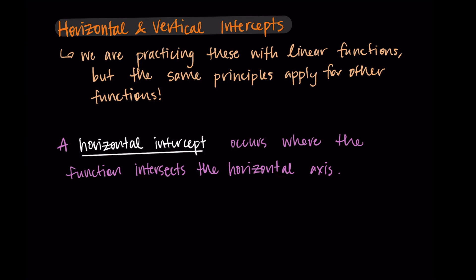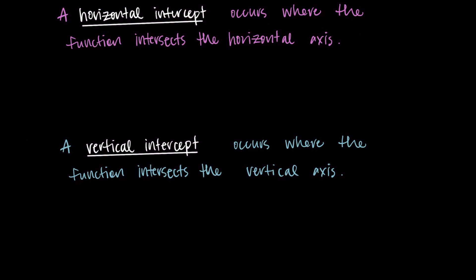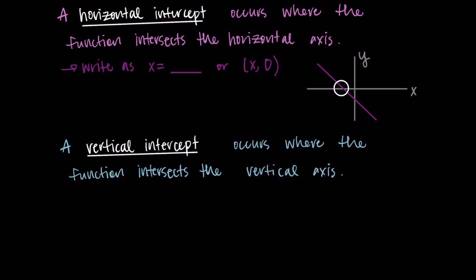We say that a horizontal intercept occurs where a function intersects the horizontal axis. Similarly, a vertical intercept occurs where the function intersects the vertical axis. For a horizontal intercept, if we have our x and y axes and some sort of line, this is where we're crossing that x-axis, our horizontal axis. We would write this as x equals a value — the x value where it intersects that axis — or as a point with some x value as input and zero as the output. Horizontal intercepts occur where the function has an output of zero.